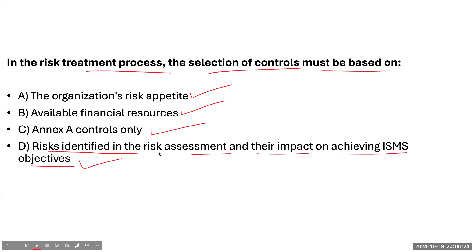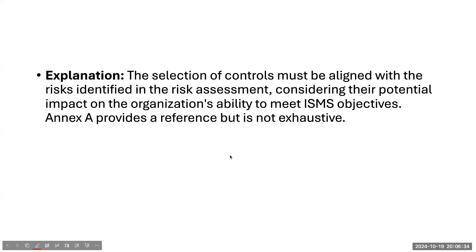The correct answer is that controls must be selected as per the risks identified in the risk assessment. The selection of controls must be aligned with the risks identified, considering their potential impact on the organization's ability to meet ISMS objectives. Annex A only provides a reference but it is not an exhaustive list.